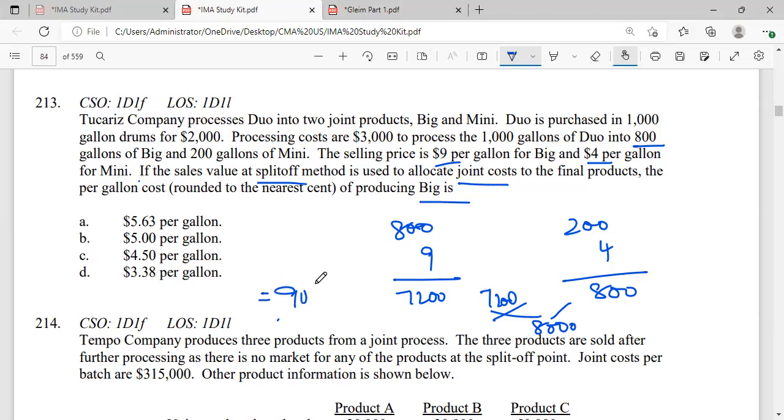So this will become automatically 10%. Okay, now what is my joint cost? Joint cost is 2,000 and 3,000 which equals $5,000. 90% is for Big, so I'll just do 90% which equals $4,500.